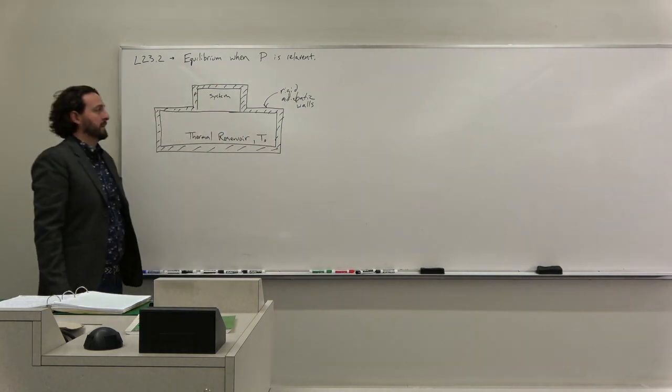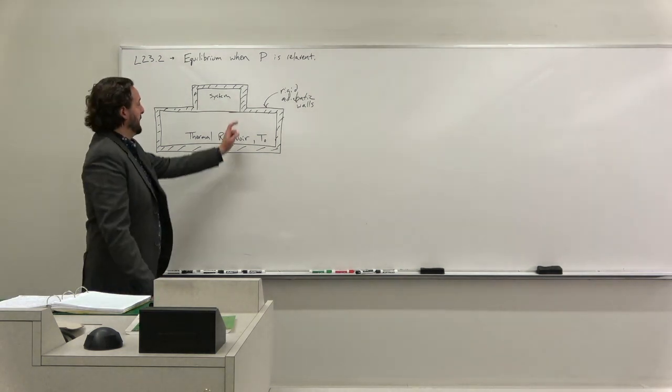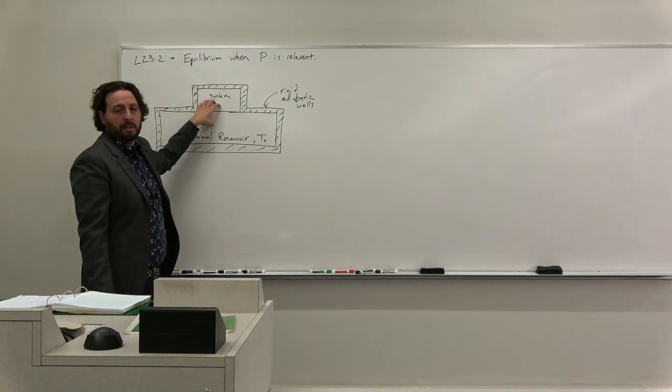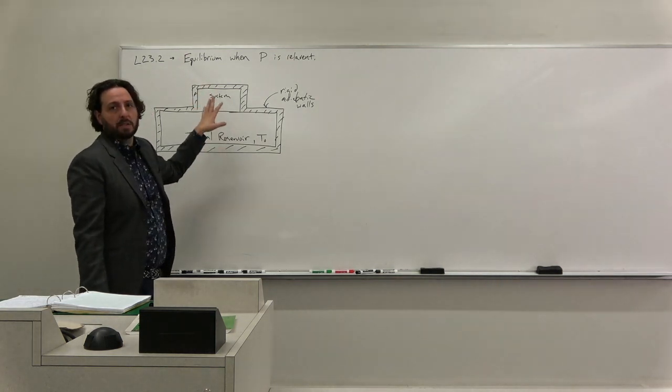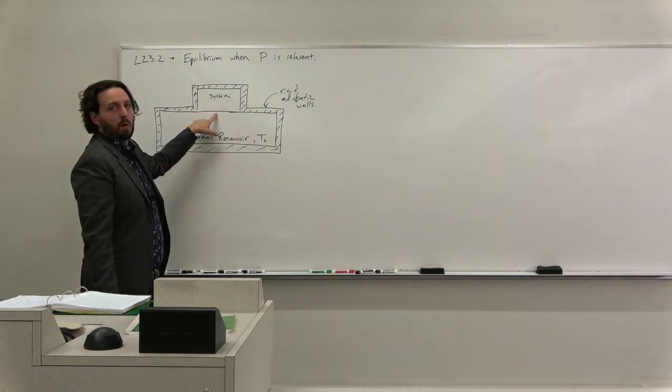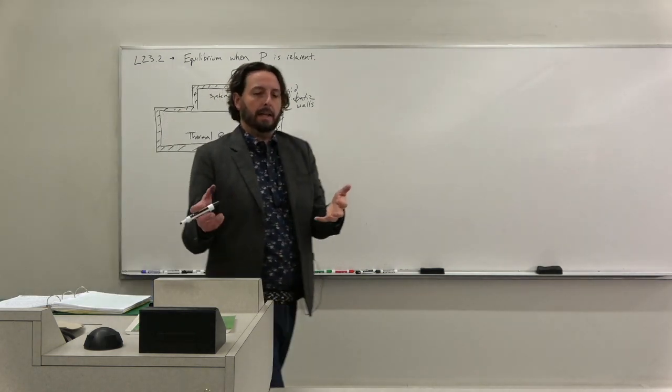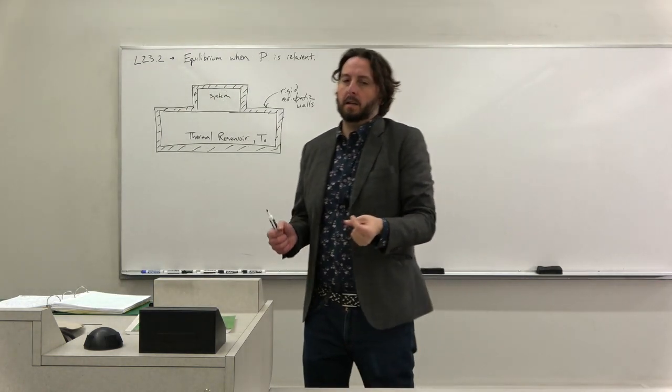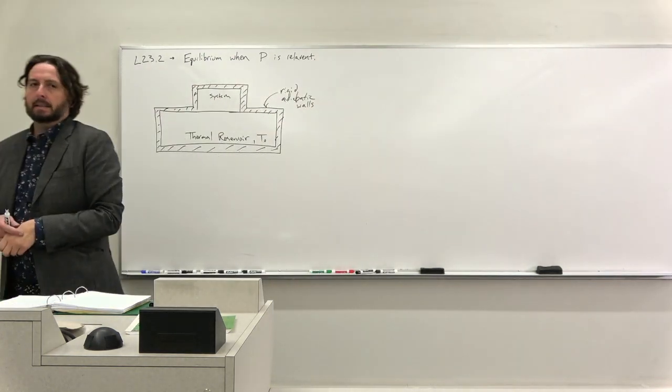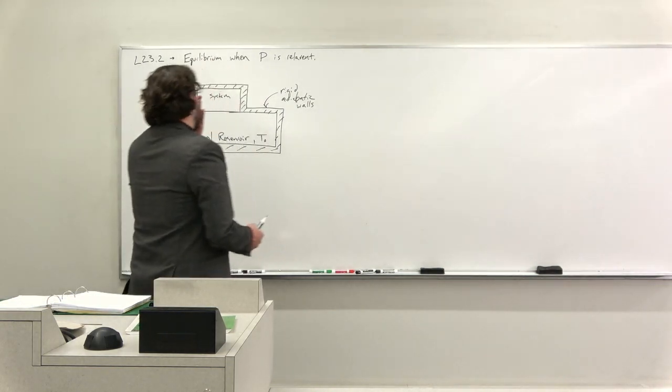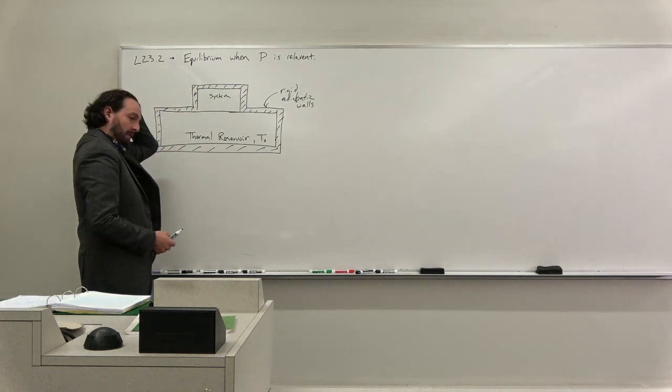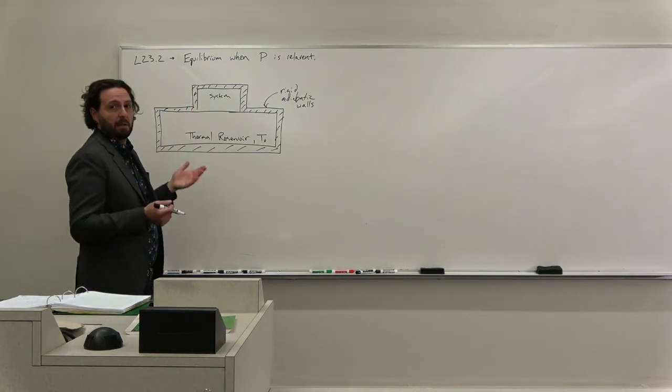We set our thermal reservoir to be some temperature T0, and last time we said these are not currently in equilibrium, we're going to allow heat to flow between them, but we had this wall fixed. Like you take a pot of water and you set it outside, or you put a system in contact with another and you ask what happens when they're in equilibrium.